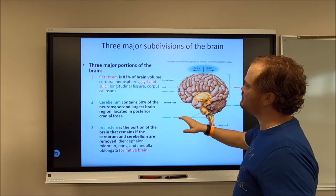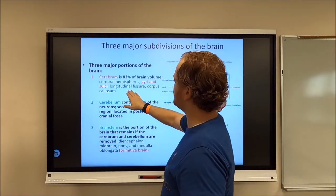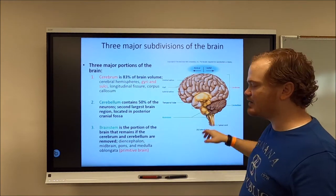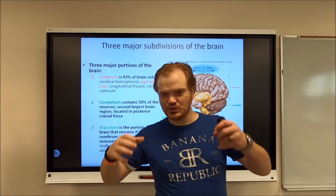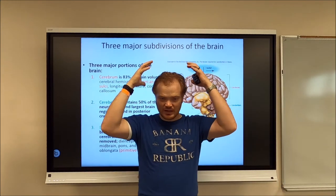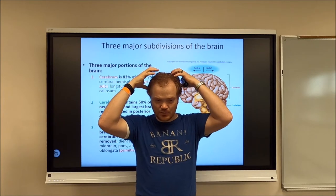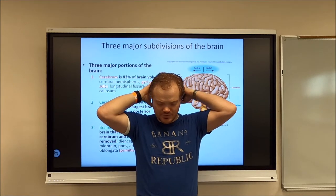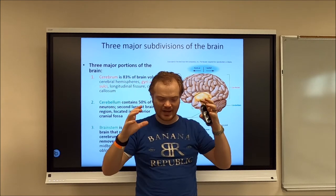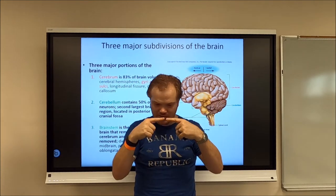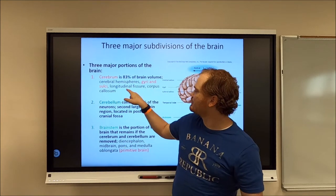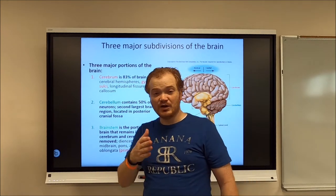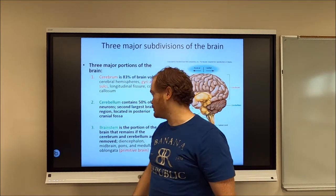I'll also point out the corpus callosum. Your brain has two halves — the right and left hemispheres — and these two halves are connected at the center by a major nerve called the corpus callosum. You'll be seeing that as we progress.